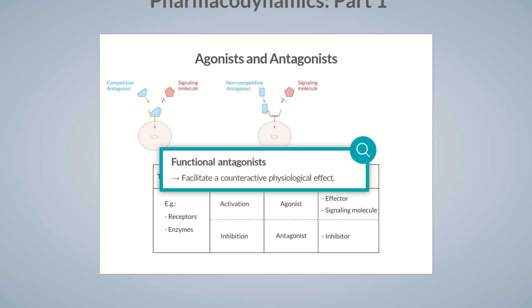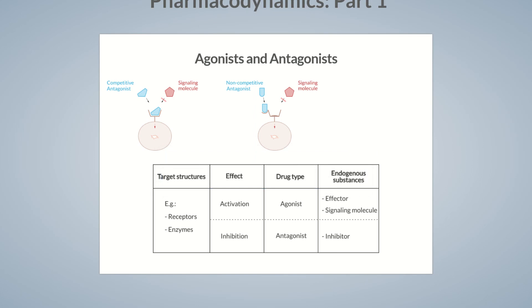This may sound somewhat confusing initially, but you probably already know a drug with such a mechanism of action — it's adrenaline, which is a functional antagonist. In allergic reactions, adrenaline antagonizes vasodilation caused by histamine, without both signaling molecules binding to the same receptor.